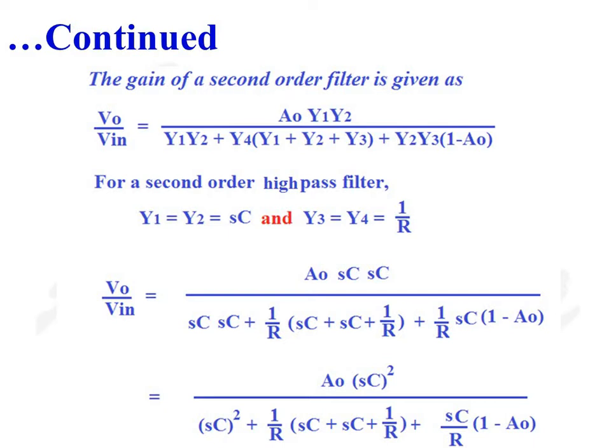For a second-order high-pass filter, Y1 = Y2 = SC and Y3 = Y4 = 1/R. Therefore, V0/VIN = A0·SC·SC / [SC·(SC + 1/R) + (1/R)·(SC + SC + 1/R) + (1/R)·SC·(1 − A0)].